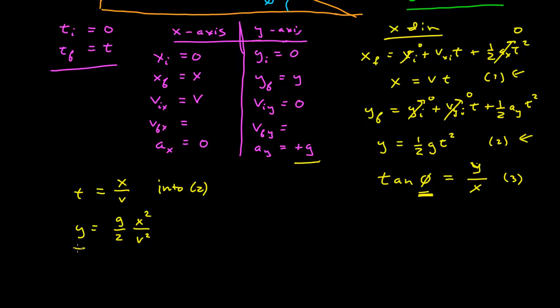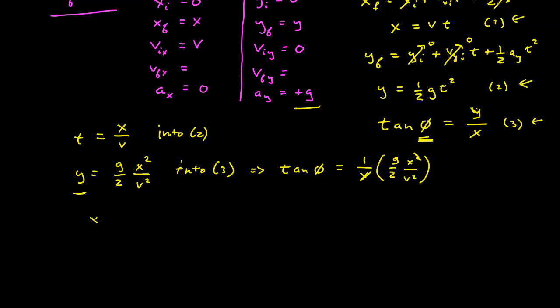Okay. But, given y, we can eliminate that by putting that into equation three. So, into three, and we get tangent of phi is equal to one over x times y, which is g over two x squared over v squared. Okay. And so we have a factor of x that cancels. And so we can solve for x using this expression. I'll do that down here. And so x is equal to two v squared over g tangent of phi.